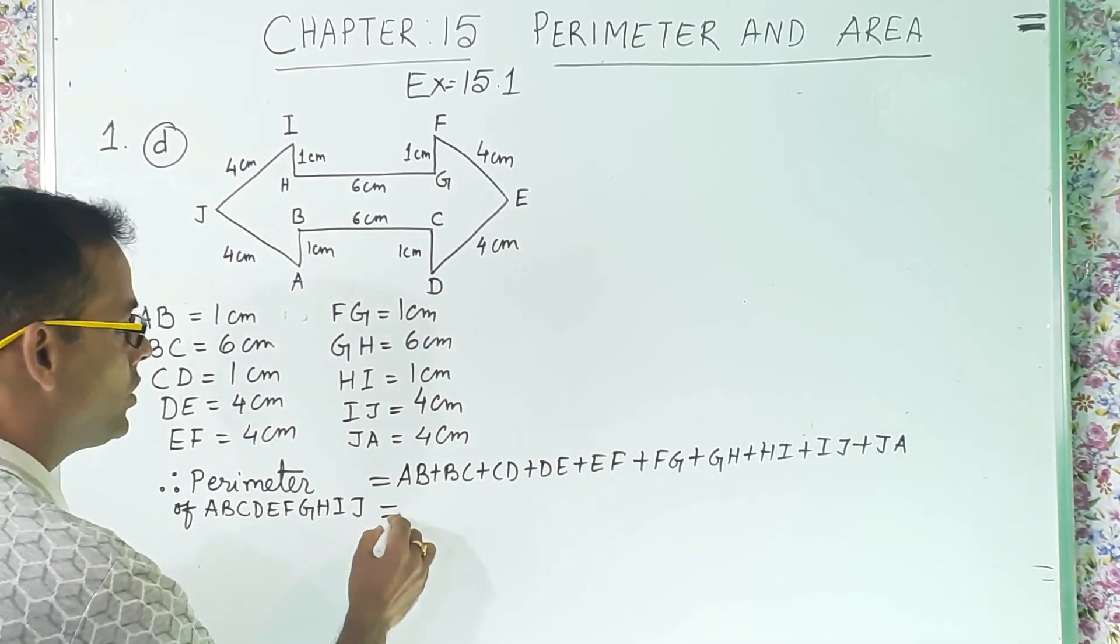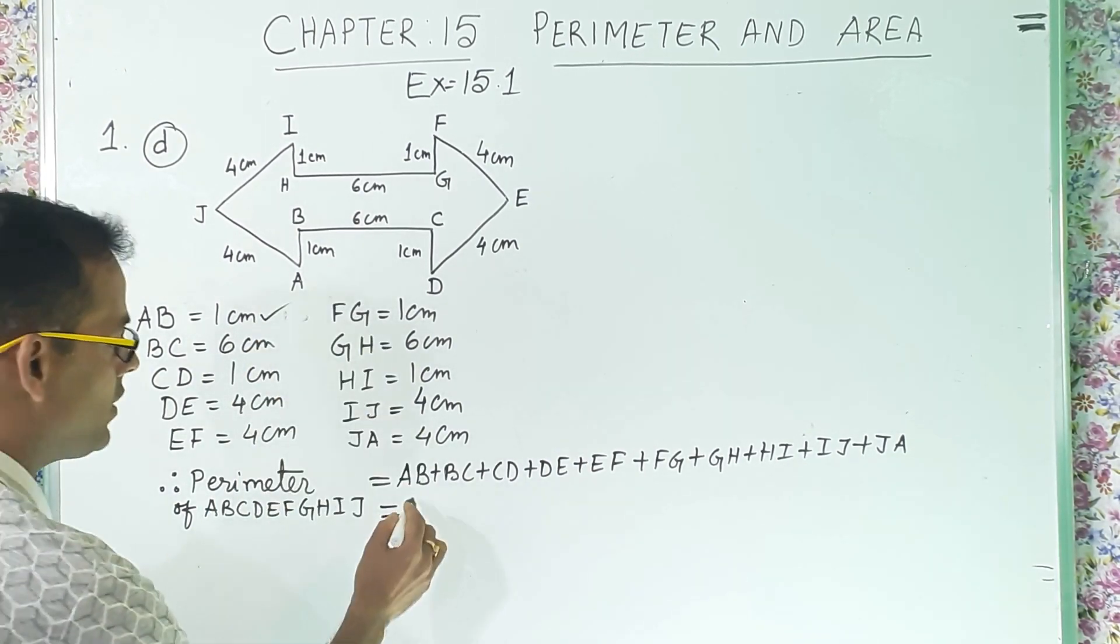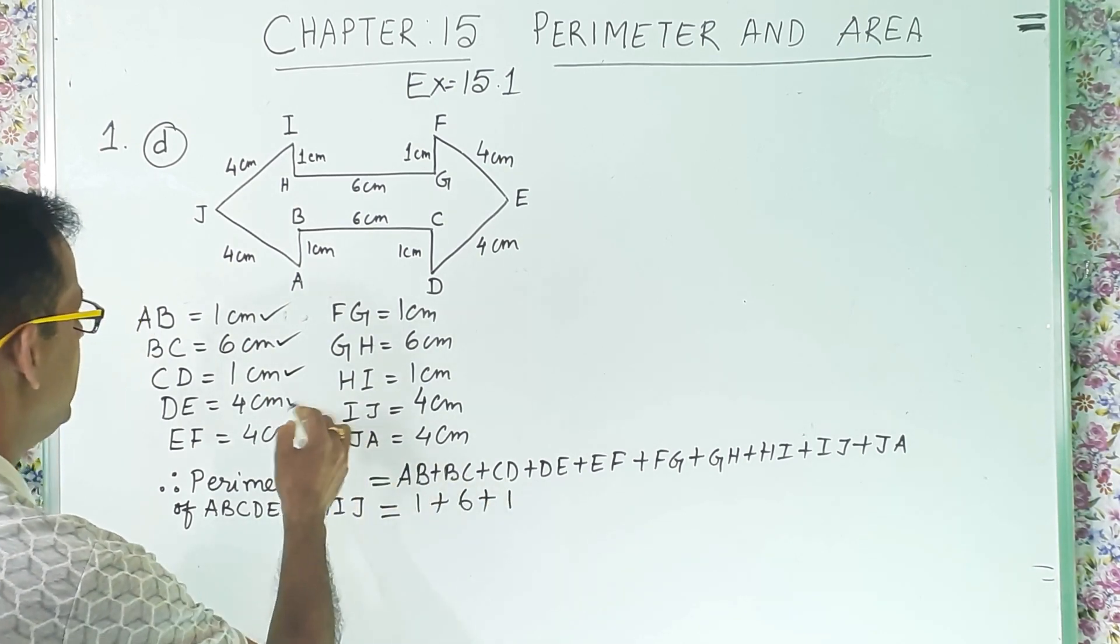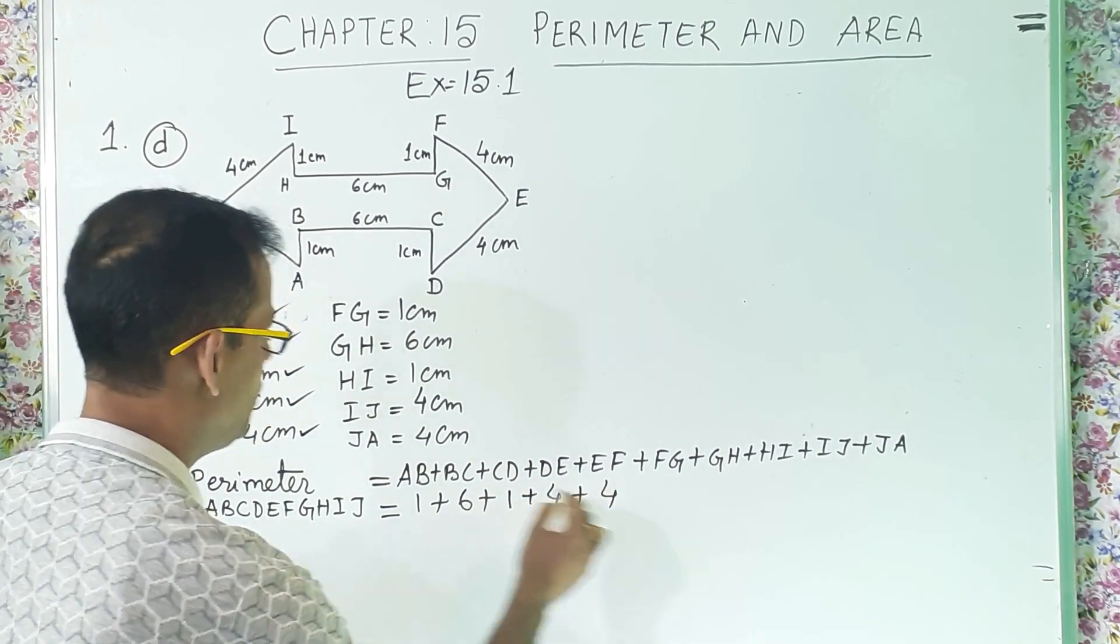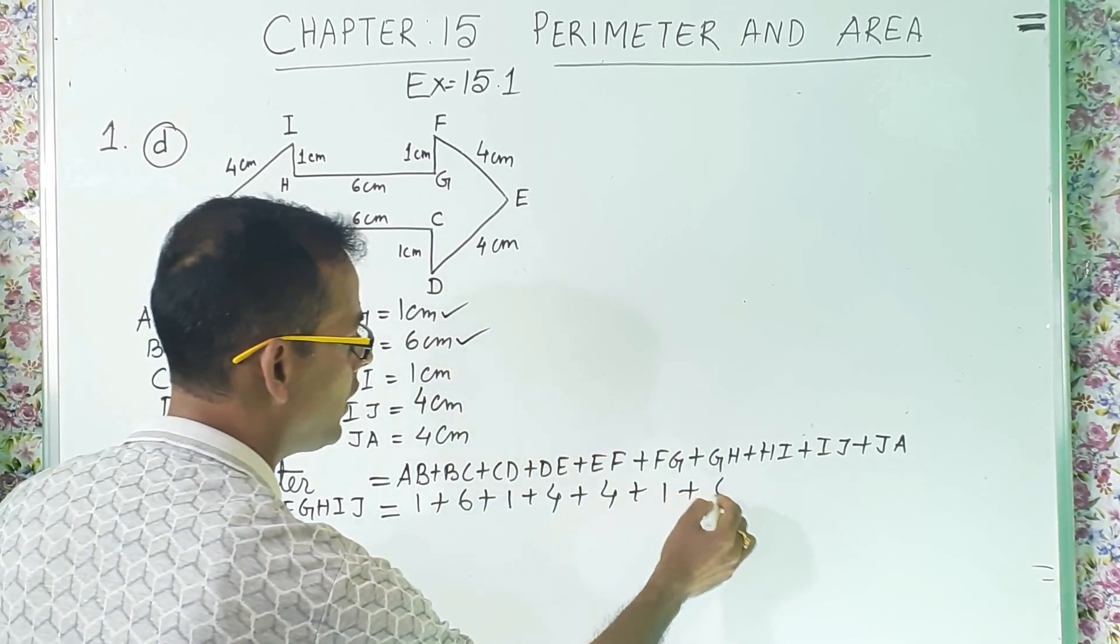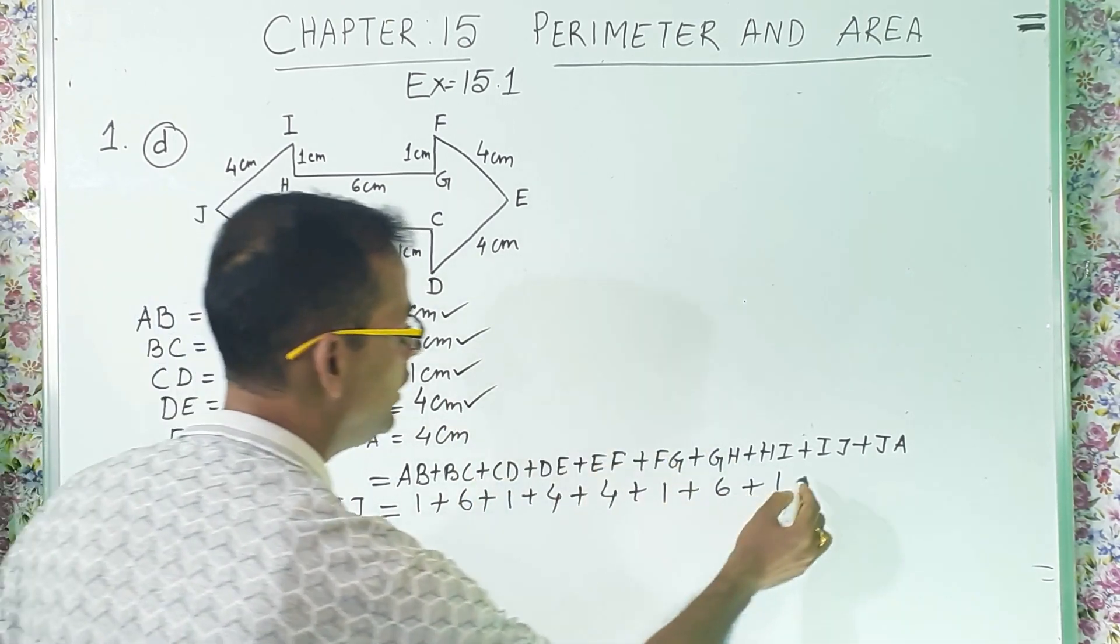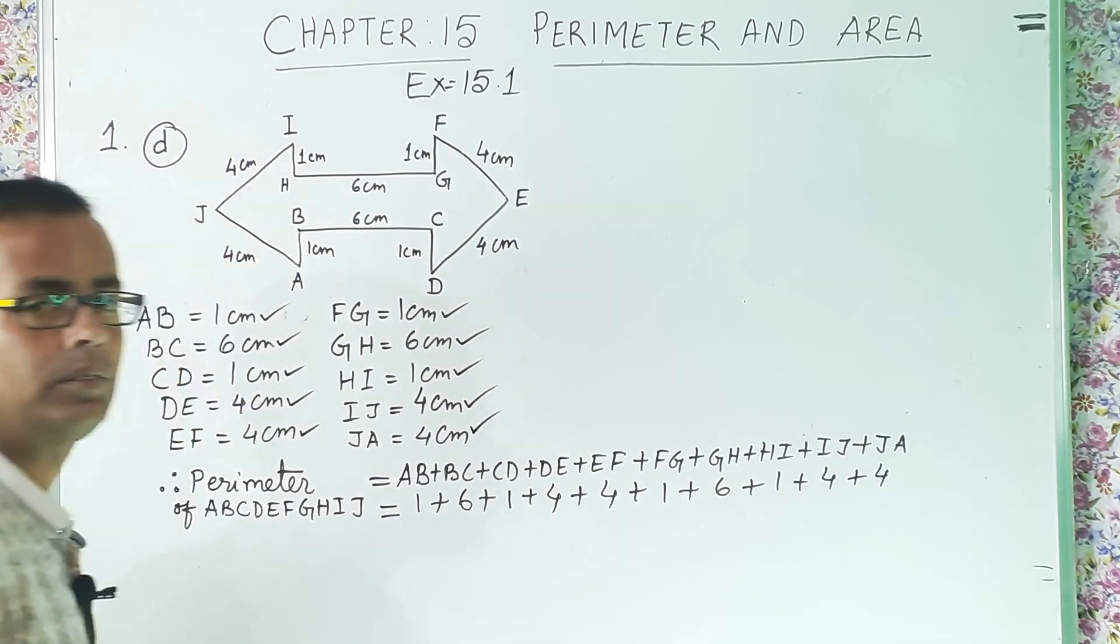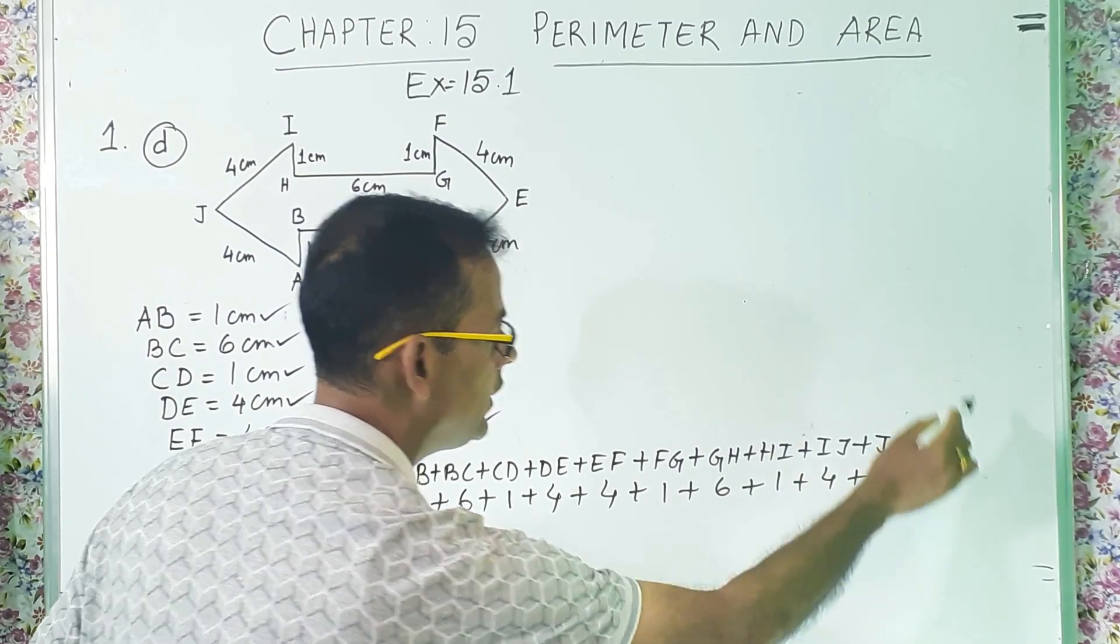Now, we will put the values. First one, AB 1 centimeter, BC 6, CD 1, DE 4, EF 4, FG 1, GH 6, HI 1, IJ 4, JA 4. Now, we will put a bracket and then we will write it centimeter.